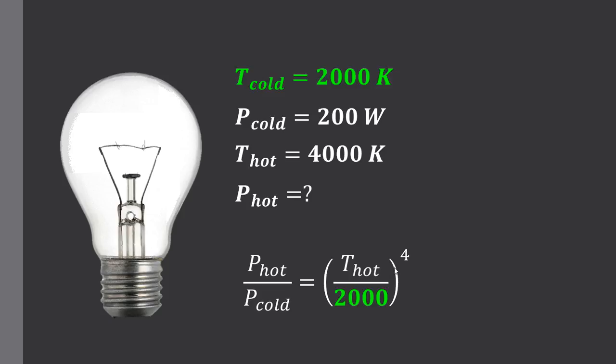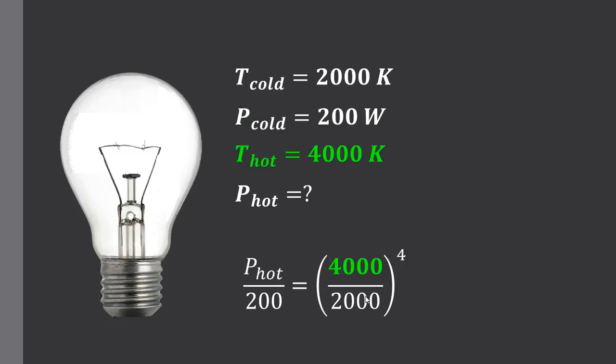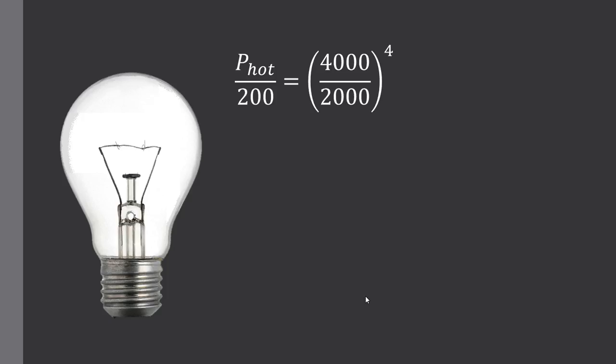So first of all we substitute our values. The cold temperature of 2000 Kelvin is substituted in. The cold power of 200 watts is substituted in. The temperature hot of 4000 Kelvin is substituted in. And the hot power P_hot is our question mark. That's what we're trying to solve. So on the right hand side of our equation here we can simplify this 4000 divided by 2000 quite easily. That comes out to 2. We raise that to the power of 4 which is 2 by 2 by 2 by 2 which comes out to 16.